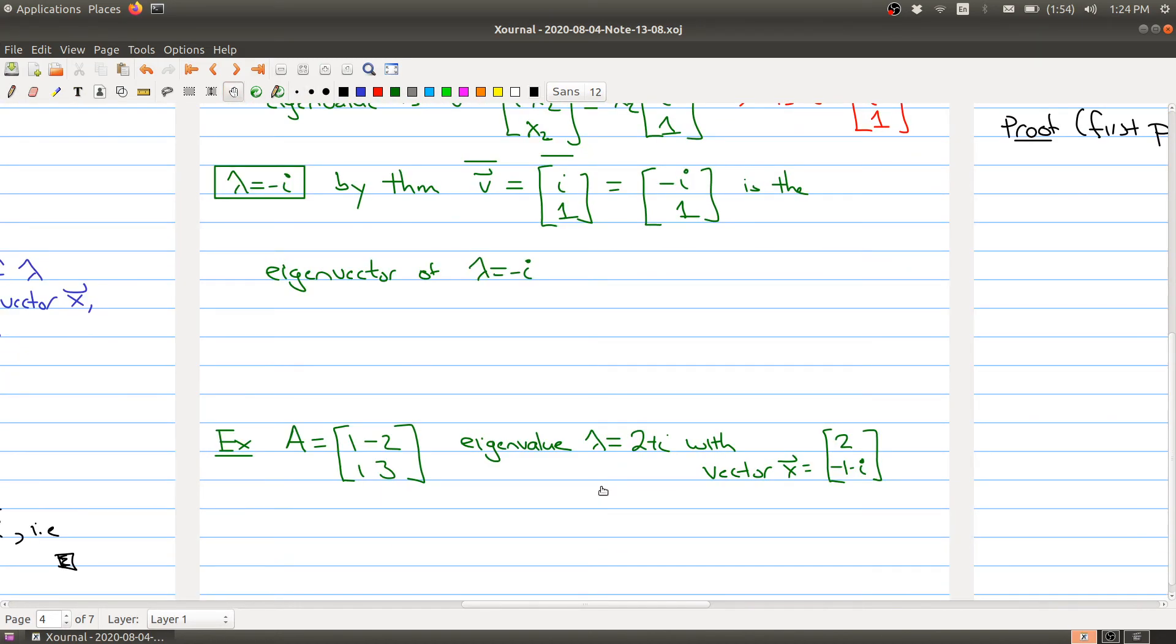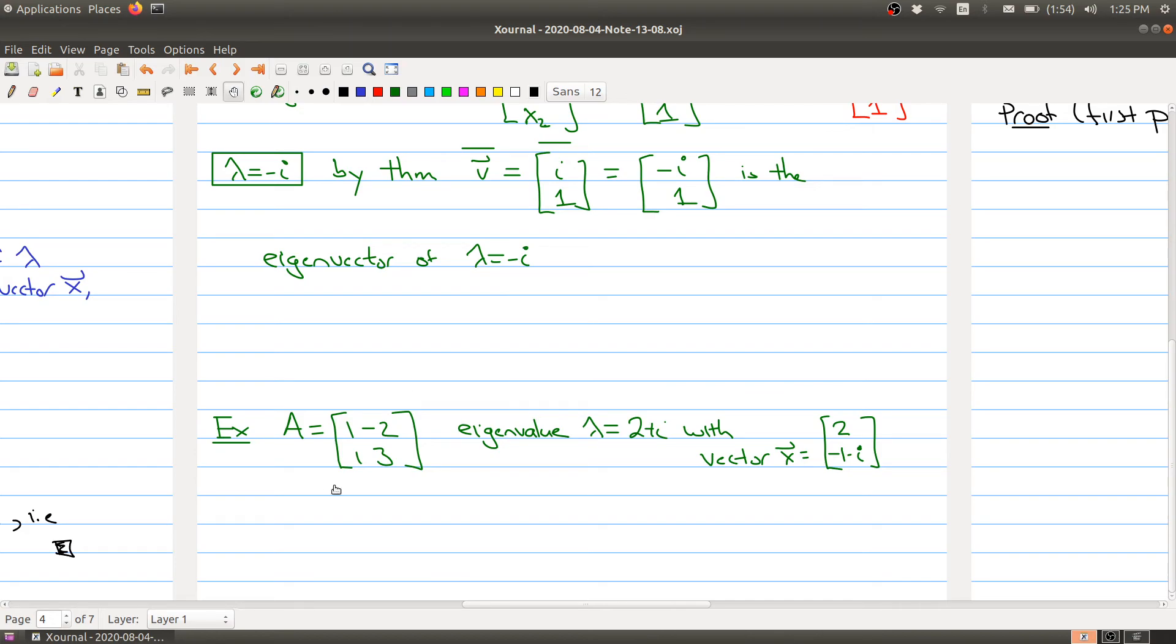To reinforce this, here's another example which we'll use later on. We have a 2 by 2 matrix, and I've already done the work. I've figured out one eigenvalue is 2 plus i, with its eigenvector [2, -1-i]. So this implies that lambda equals 2 minus i is an eigenvalue with eigenvector [2, -1+i]. We're just taking the conjugate of everything inside of the vector.